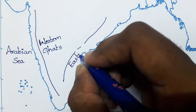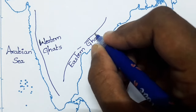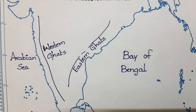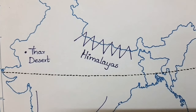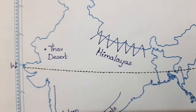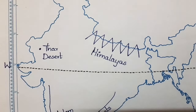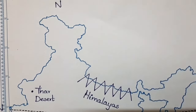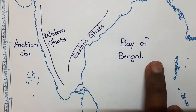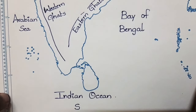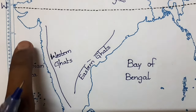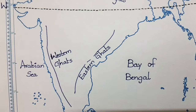On the India map we can point using dots, lines, or symbols for easy understanding for children. To recap: the right side is East, the left side is West, the top is North, and the bottom is South. The three oceans and seas are: Bay of Bengal on the right side, Arabian Sea on the left side, and Indian Ocean on the bottom. On the southern side, the left side has the Western Ghats and the right side has the Eastern Ghats.